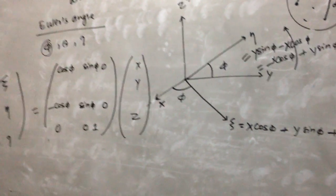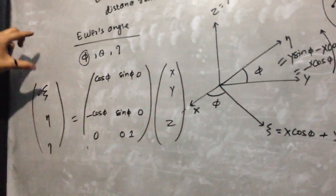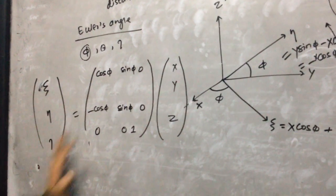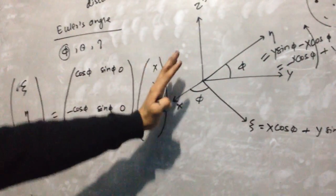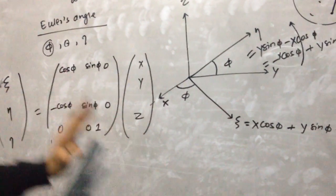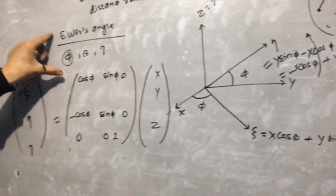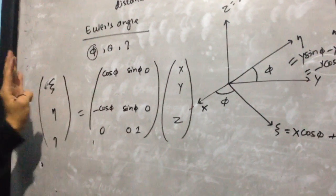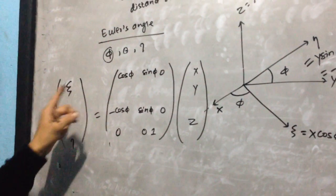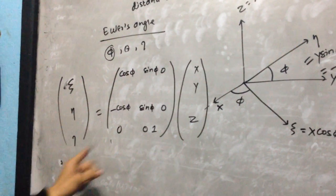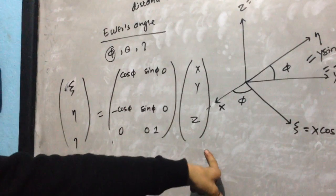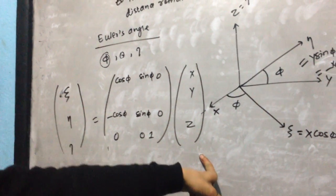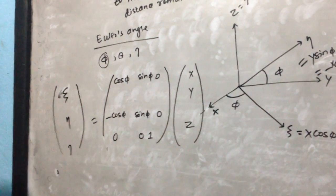So we have transformed Xi, eta, tau into X, Y, Z. This is the first Euler's angle phi, and we have expressed the newly formed axes Xi, eta, tau in terms of the original axes X, Y, Z. This completes the first rotation corresponding to the first Euler's angle.